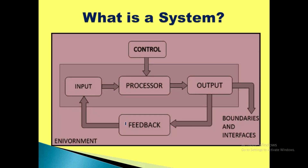Let's look at the diagram — which you must include in your answers. In this system, input is coming from the environment, being processed, and output is being generated. The input, output, and processor are all controlled through the control element. Boundaries or interfaces define the outer portion through which the system interacts. The boundary defines the limit of the system; outside it is the environment. Based on input and output, feedback is generated. Interfaces are the medium of communication between two subsystems, components, or business procedures — for example, between the processor and output, there is a separate interface.